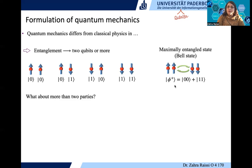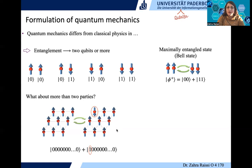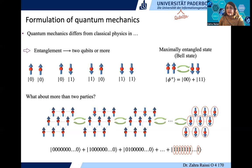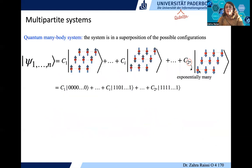What about more than two quantum systems? We have configurations where all spins are up (all ket0), or all up except the first one, and so on, all the way to all spins down (all ket1). All of these configurations can be in superposition. When we deal with many-body systems, we have an exponentially large number of terms and configurations. Dealing with many-body systems is difficult, but it brings a lot of advantage when we want applications or want to build quantum devices.